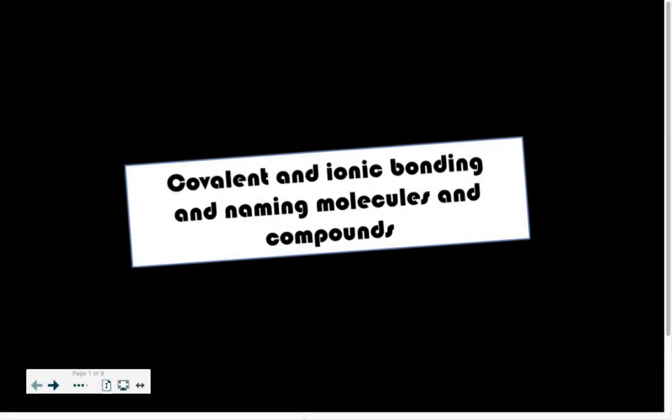This is going to be a video about covalent bonds and ionic bonds. The reason why we have to talk about these two different types is that it leads into the proper naming of each of these bonding types. Because each bonding type has its own separate rules of naming molecules and compounds, it is very important to identify which bond type it is, then use those rules to name the bond.